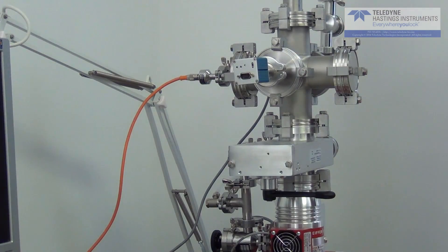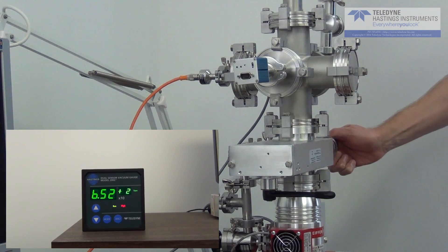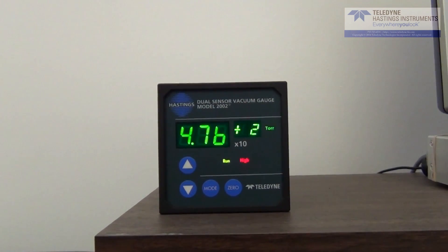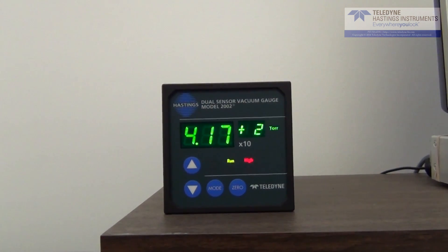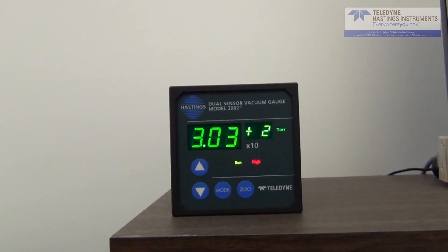Now let's see the HPM 2002 in action. I've got a gauge tube hooked up to the system over here, and I'm going to begin to rough it out. So you'll hear the pump start to kick in here. And remember, the microprocessor is looking at only the piezoresistive sensor above 32 torr.